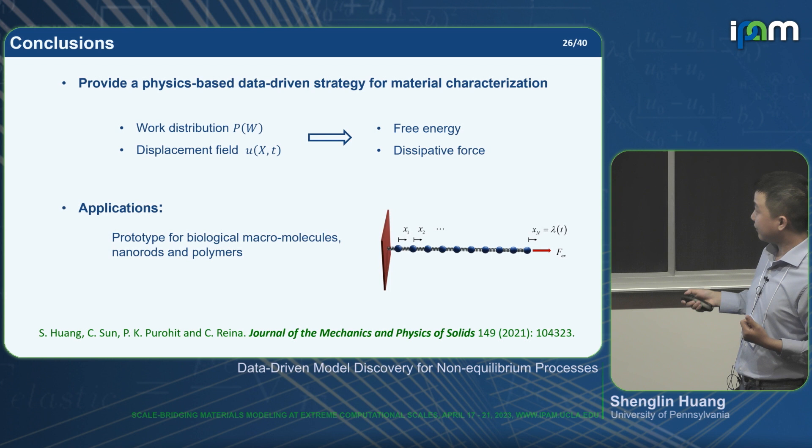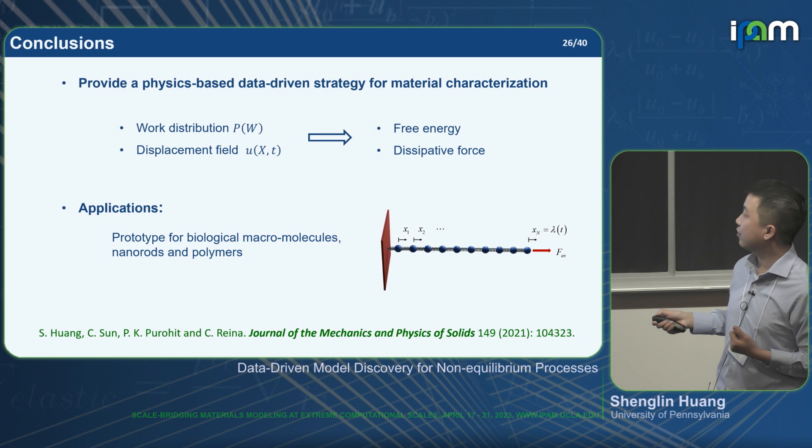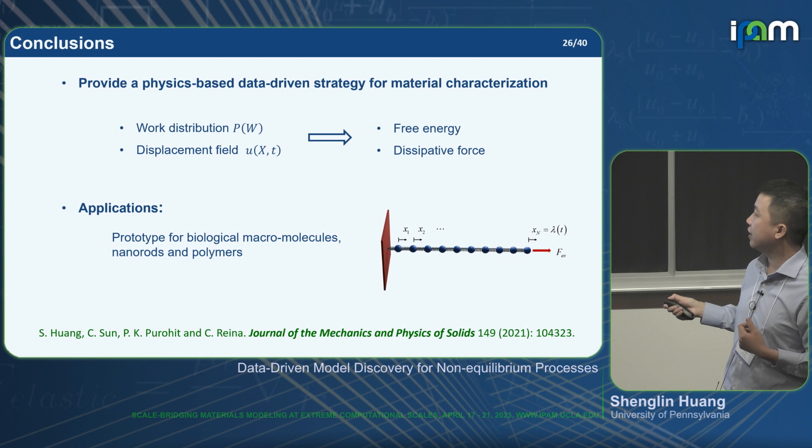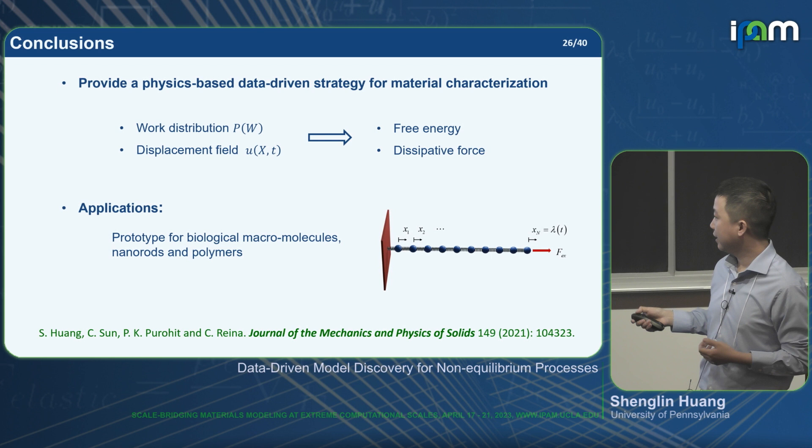In conclusion for work two, we provide a physics-based data-driven strategy for material characterization. From the work distribution on the system and the displacement field, we can recover the free energy, dissipative force, and the full continuum model. This work was published in JMPS two years ago.